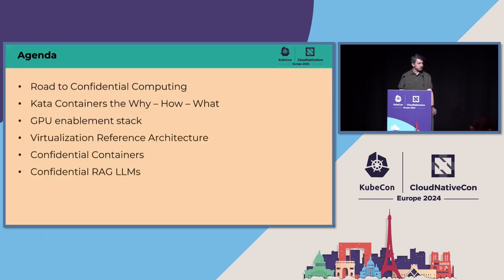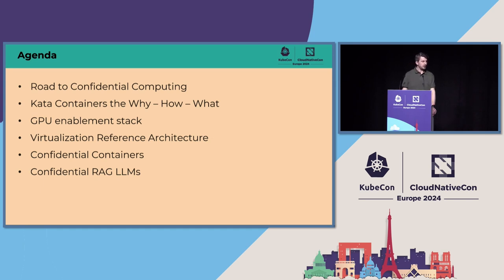The agenda covers how we came to confidential computing, why we chose Kata as the main driver for enabling sandbox environments with the GPU, an explanation of our GPU enablement stack important for our lift-and-shift strategy, a virtualization reference architecture to support advanced use cases like GPU Direct GDS or RDMA in virtualized sandbox environments, a stop on confidential containers, and confidential RAG LLMs.